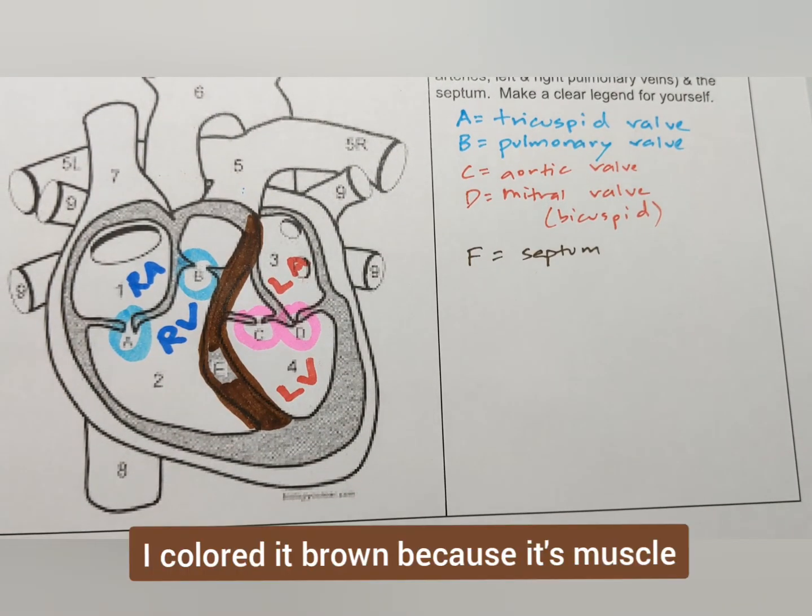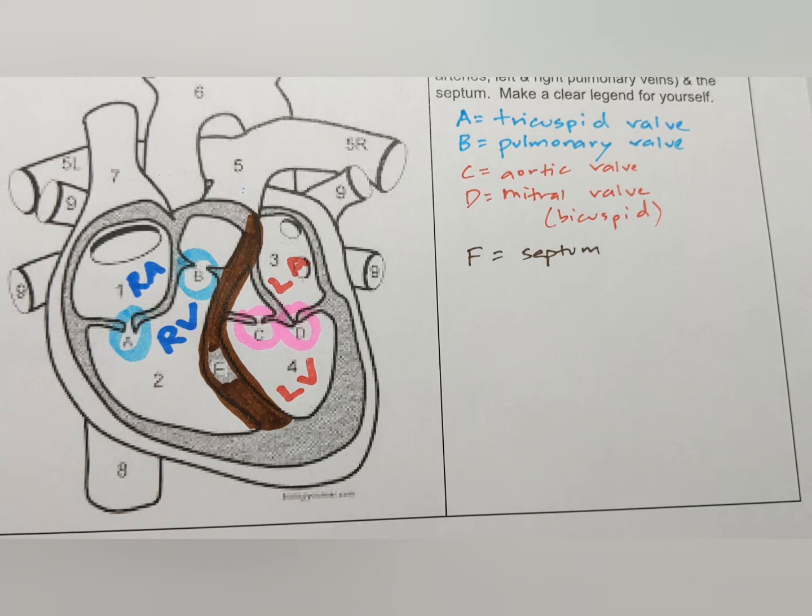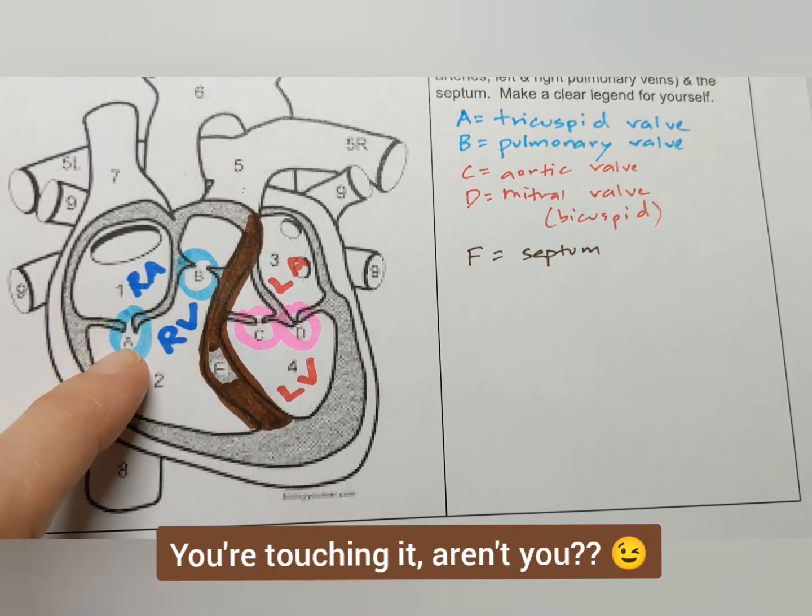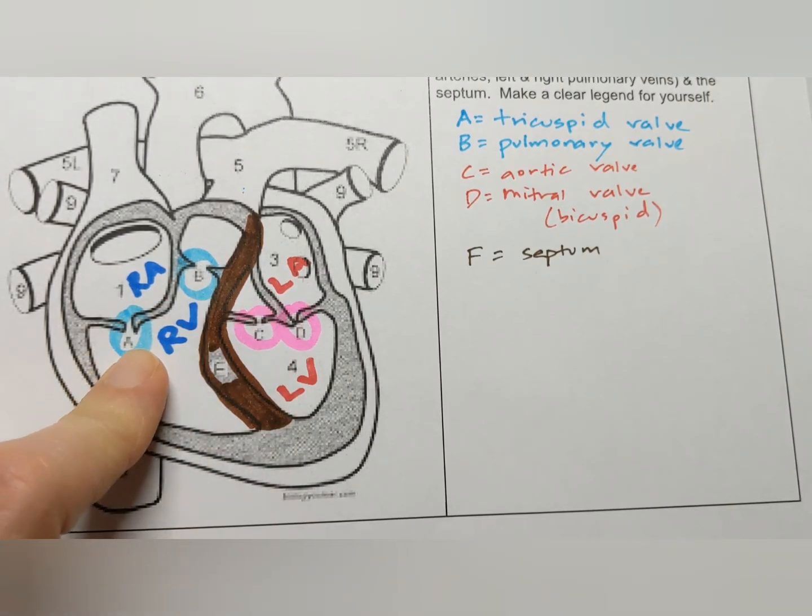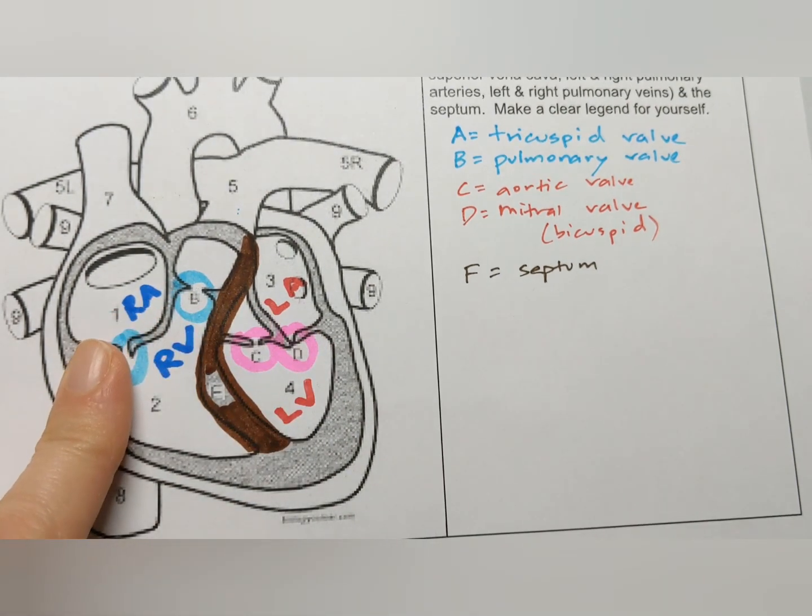The last part of our diagram is the septum and sept means wall. If you touch the base of your nose, that is the septum of your nose. It separates your left and right nostril and this is the septum of your heart that separates the left and right side of your heart. It's a thick wall of muscle that keeps the blood in the left and the right side from mixing together.